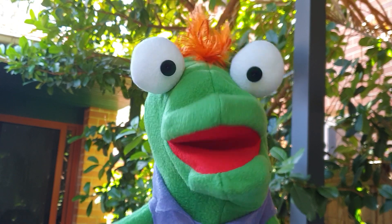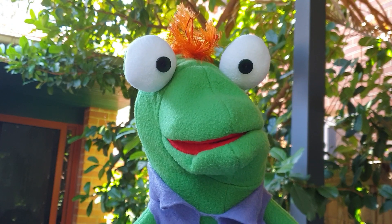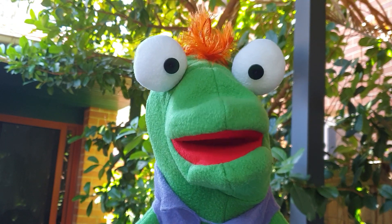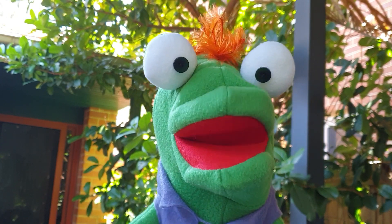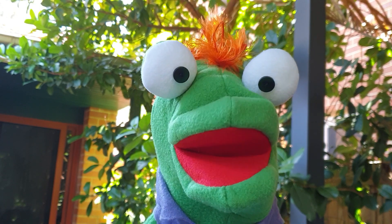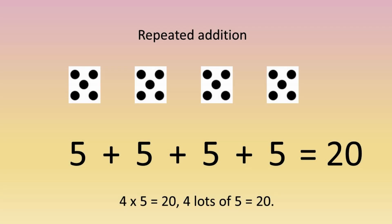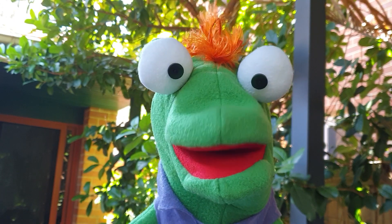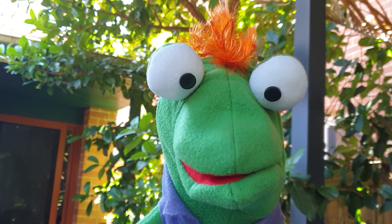Multiplication and division are two of the operations we use in maths. Multiplication is like adding the same number multiple times. Four times five is like five plus five plus five plus five. That's called repeated addition. It is also groups of, so four times five is four groups of five.